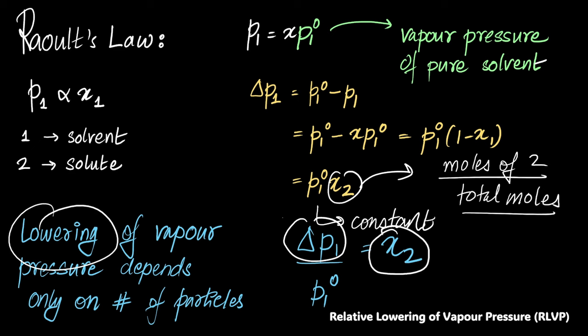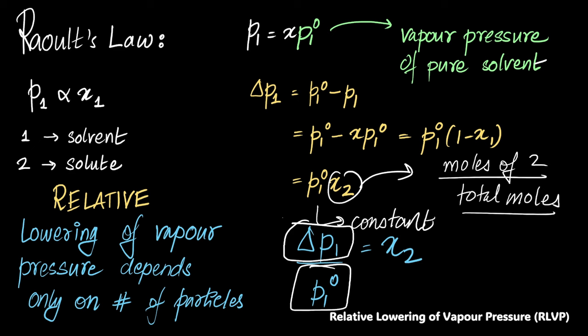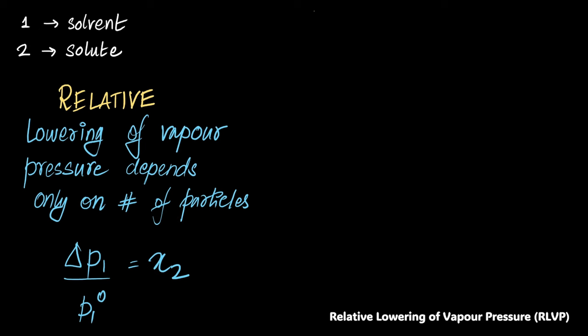If I put number of particles on the right-hand side, I have X2. On the LHS, I need to take delta P1 and divide it by P1⁰. So I'm going to change this definition over here on the left a little bit and say that, let's talk about relative lowering of vapor pressure. Why relative? Because I am comparing the change in something divided by the original same thing, right? So that is relative to this. So this is the complete definition. That relative lowering of vapor pressure depends only on number of particles.